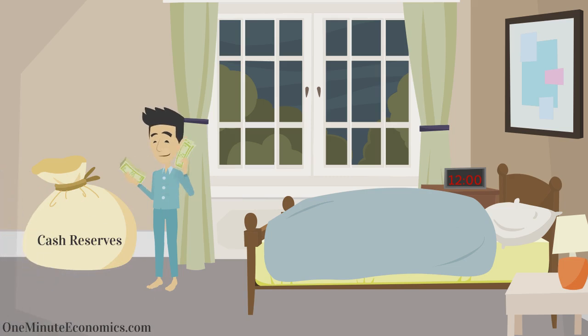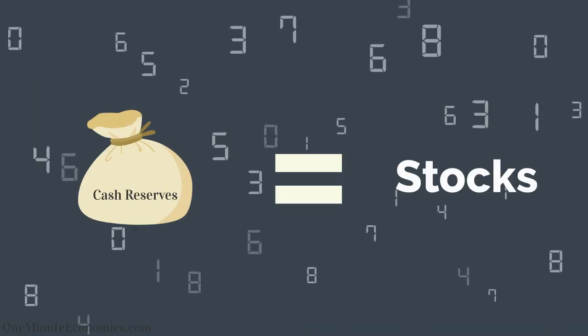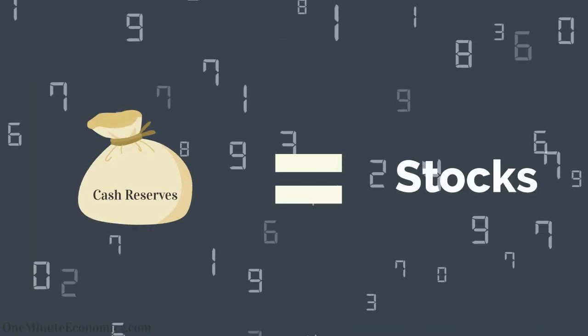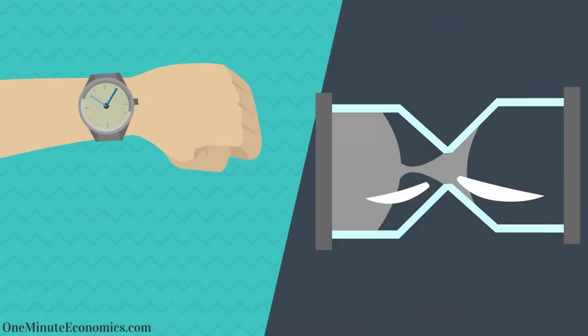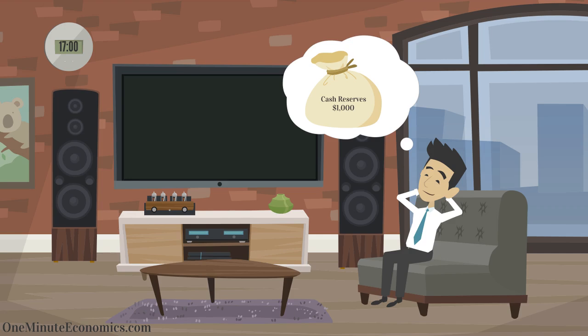John keeps a so-called cash reserves bag of money in his house. From an accounting or economic perspective in general, we put that bag of money in the stocks category. We take a snapshot at a certain point in time and, for example, say that at 5 pm today, John had a thousand dollars as cash reserves.